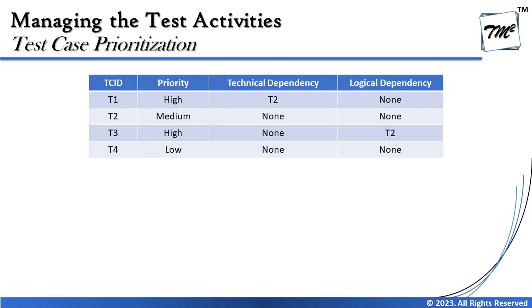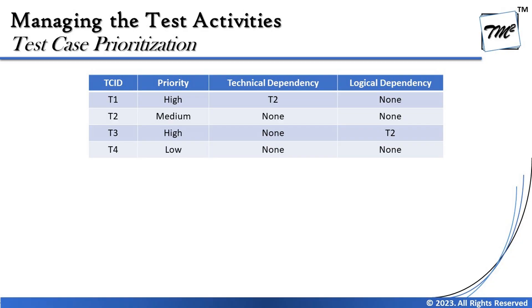To understand how dependencies, risk factors, and priorities work together to define a test execution schedule, let's look at a quick example. On screen we have a small hypothetical table — I'm not taking any real technical constraints or features into account, just creating dummy data to illustrate what a test execution schedule might look like and how to define the order of execution.